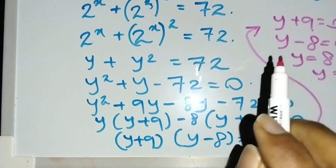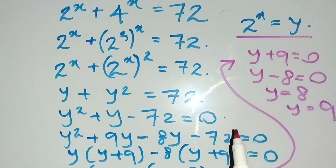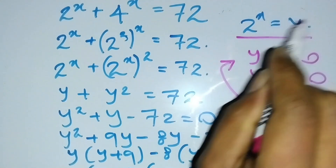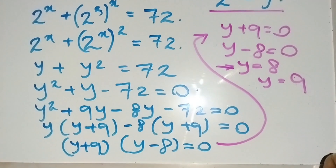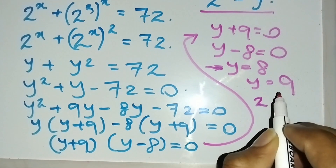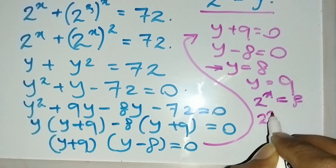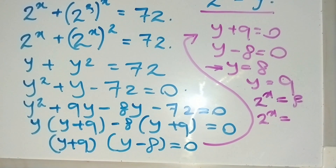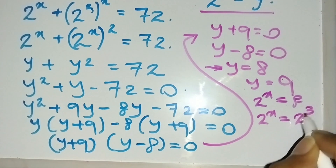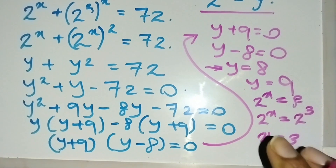Using the substitution 2^x equals y, I substitute y equals 8. So 2^x equals 8, and since 8 is 2 to the third power, x equals 3. This is the final solution of this mathematical expression.